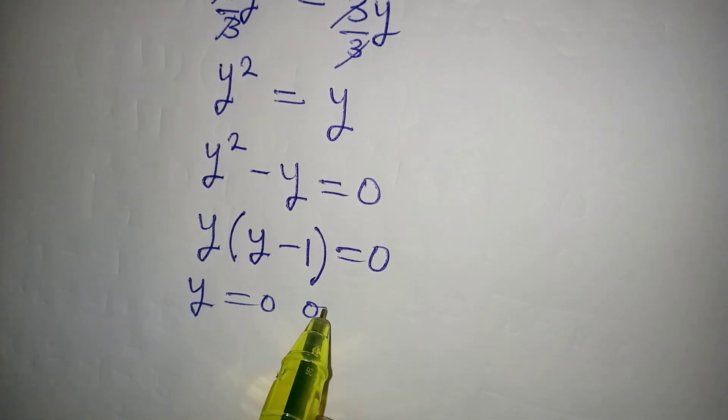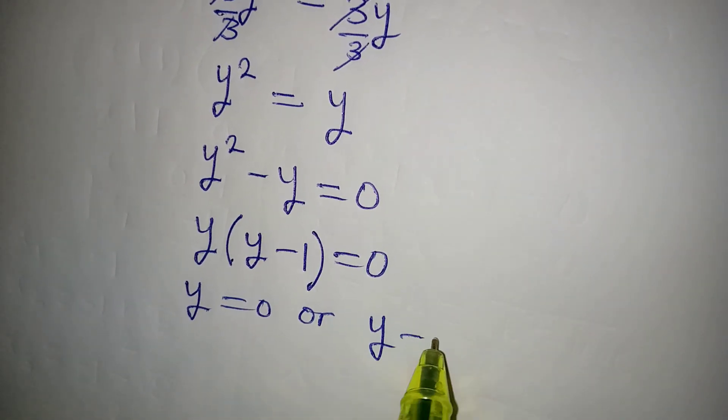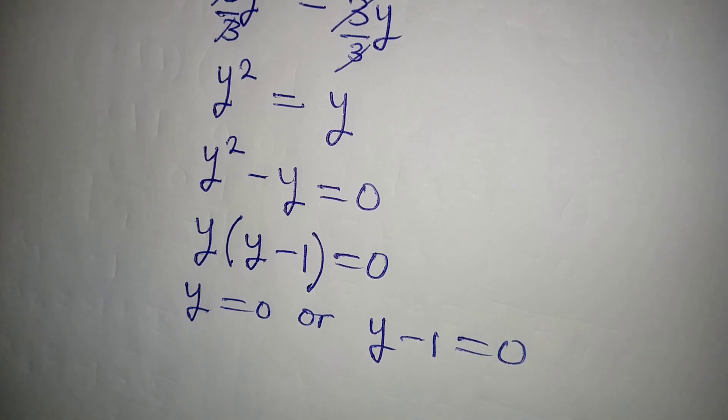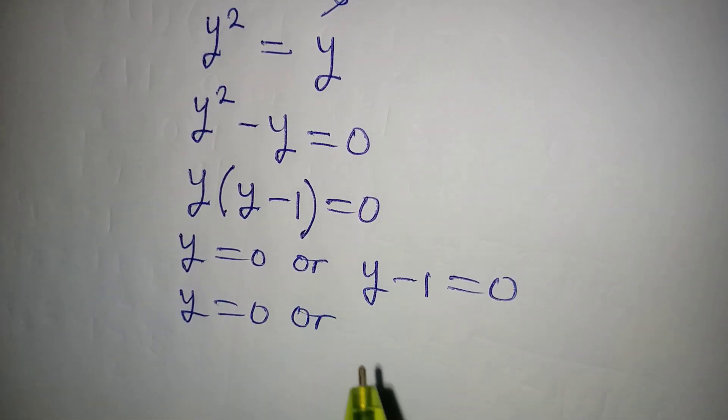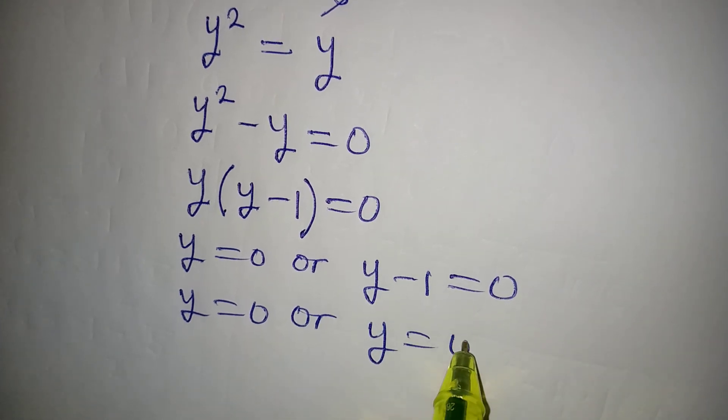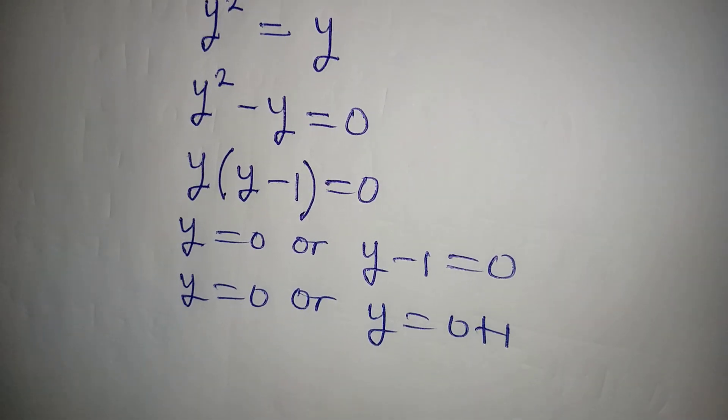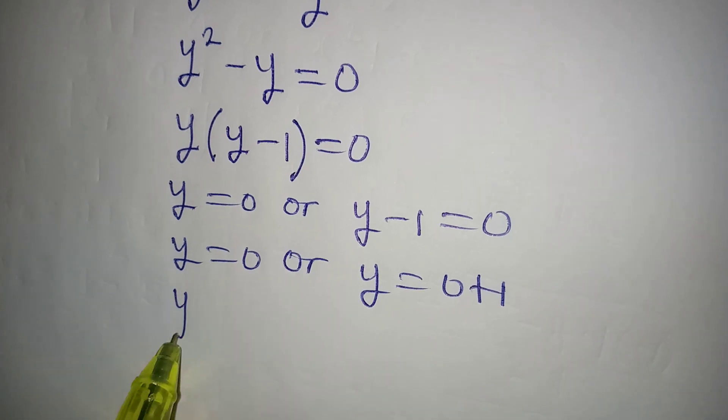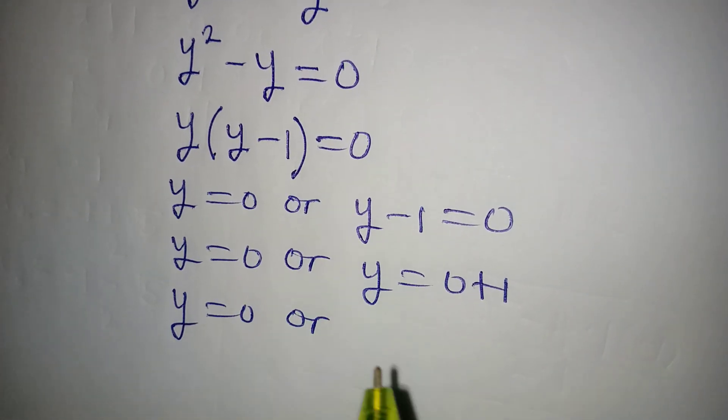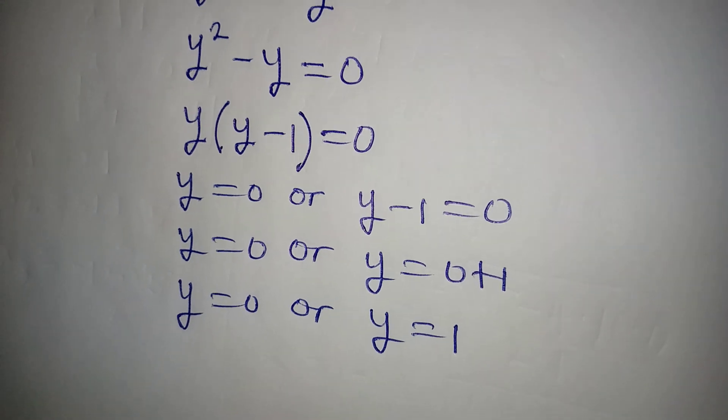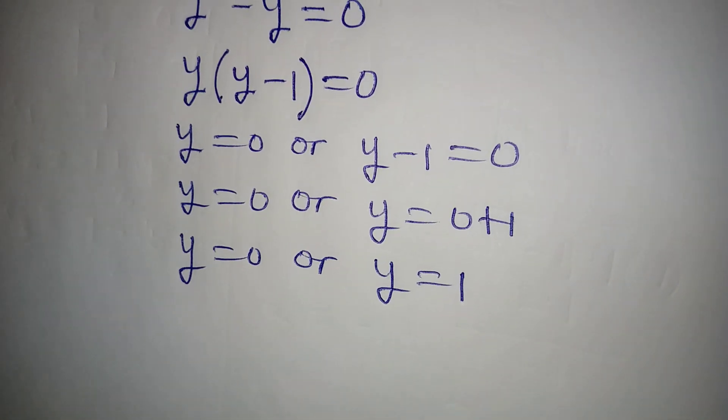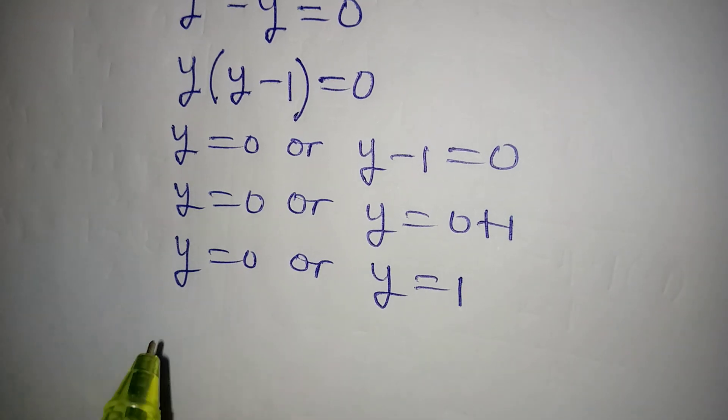We can see that y is equal to 0, or y minus 1 is equal to 0. So from here, y is equal to 0, or y is equal to 0 plus 1. Our y here is 0 or y here is 1. So these are the two values of y that can satisfy the equation.